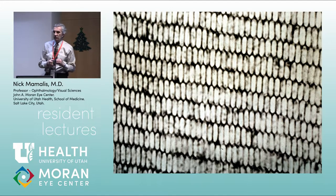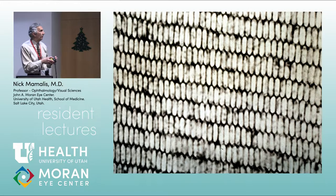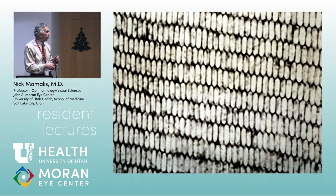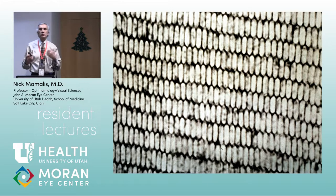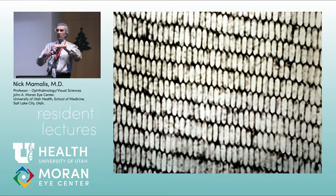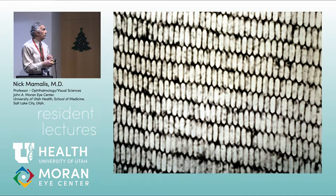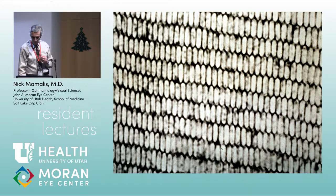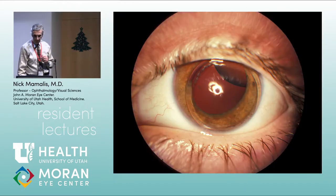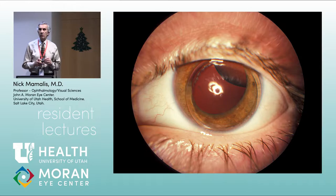Looking at the individual fibers under EM, they resemble a honeycomb — they are hexagonal cells. As the cells mature they lose their nuclei and are left with a lot of protein and other materials. This is what the cortical fibers in the lens look like: a hexagonal honeycomb pattern.